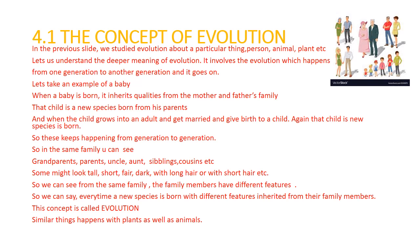This keeps happening from generation to generation. So in a family, you can see grandparents, parents, uncles, aunts, siblings, cousins, etc. Some might look tall, short, fat, or dark, with long hair or short hair. From the same family, the members have different features. Every time a new species is born with different features inherited from their family members — this concept is called evolution. Similar things happen with plants as well as animals.